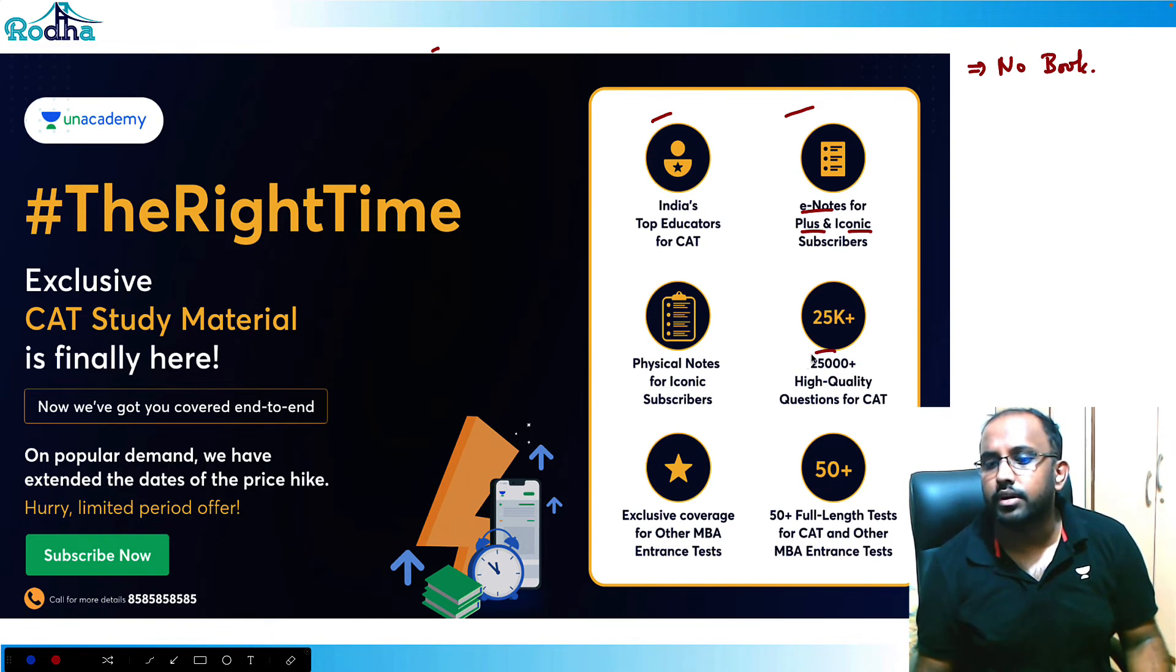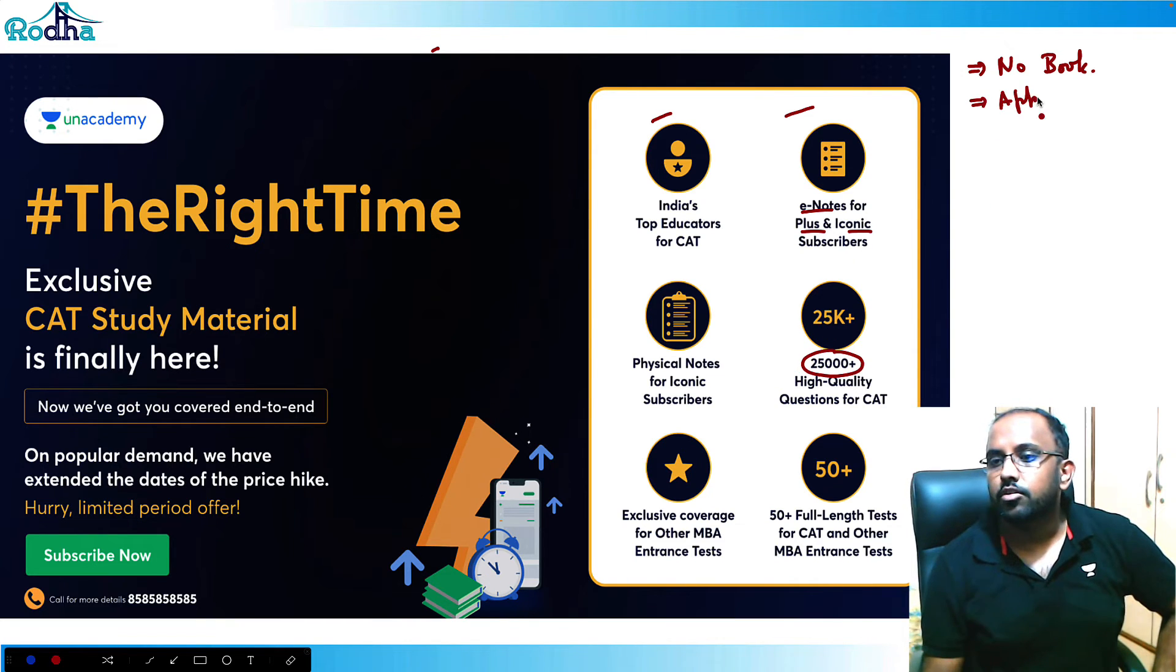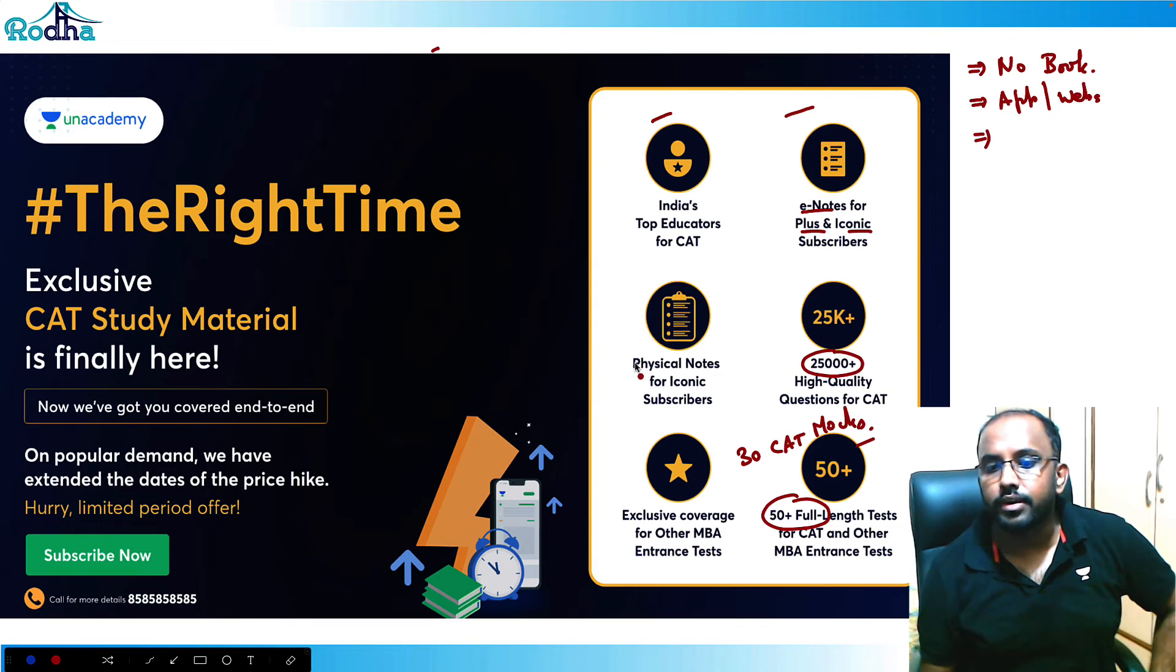There's no book needed if you join classes. Apart from that, there are 25,000 plus questions in the app and website, so you need no need to practice from anywhere else. We are now giving 50 plus full length mocks. In that around 30, there will be 30 CAT mocks, working on these projects guys. Also there will be physical notes available for the Iconic people. But all the notes are available in the e-view format for all the Plus and Iconic people. So I've been sharing a lot of these posts at all the WhatsApp chats or the people.